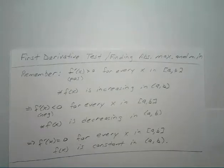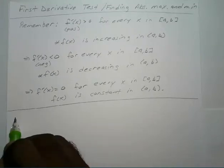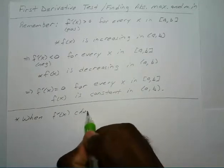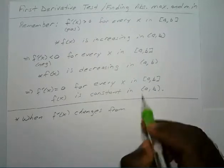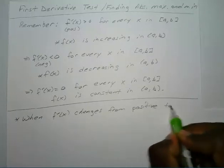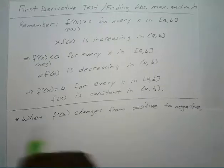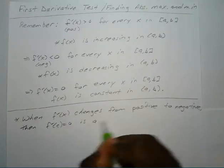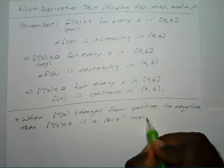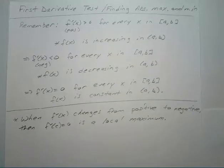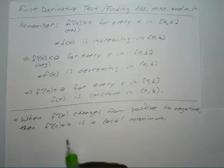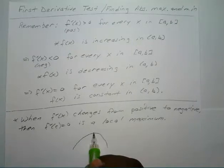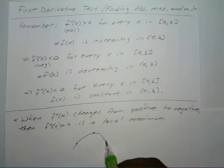Now we're going to take a quick look at the first derivative test. When your derivative changes from positive to negative, then f prime of some value c equals zero is a local maximum. To help visualize it, if you have a graph that kind of looks like that, let's say you have a point to the left of it and a point to the right of it.